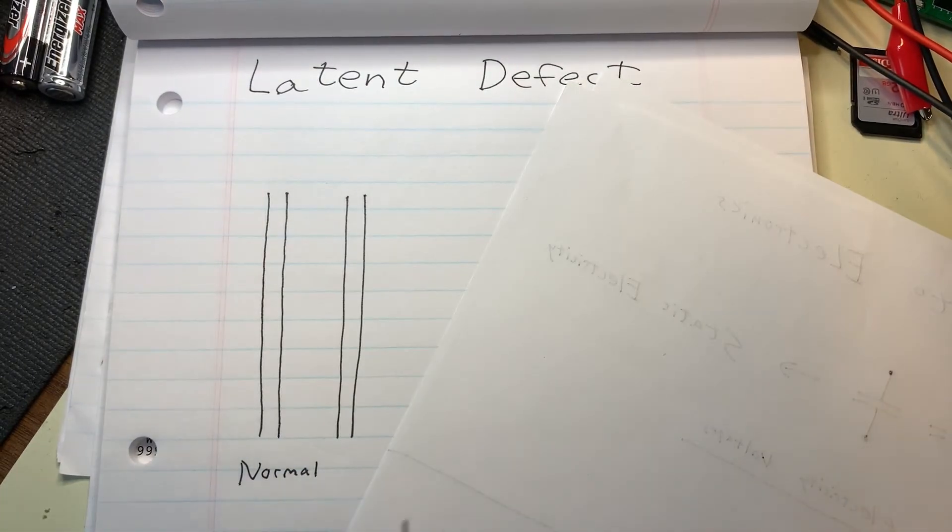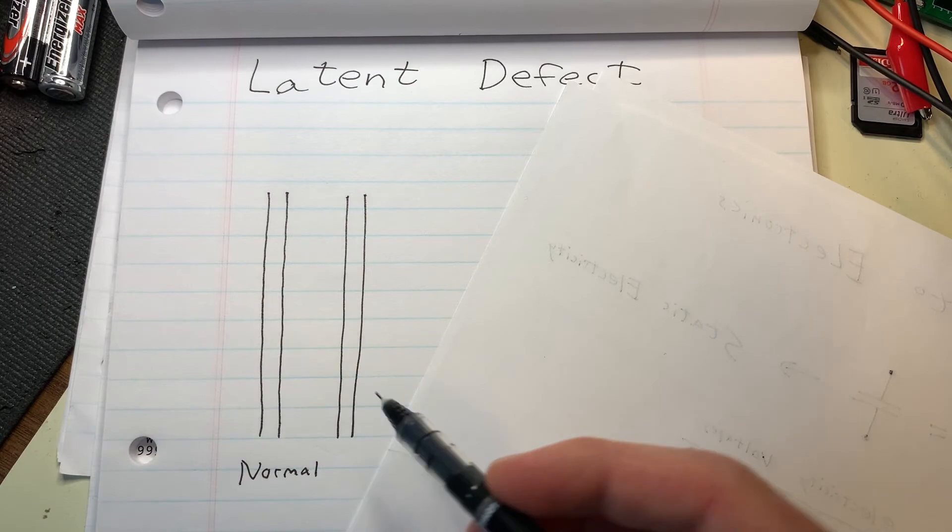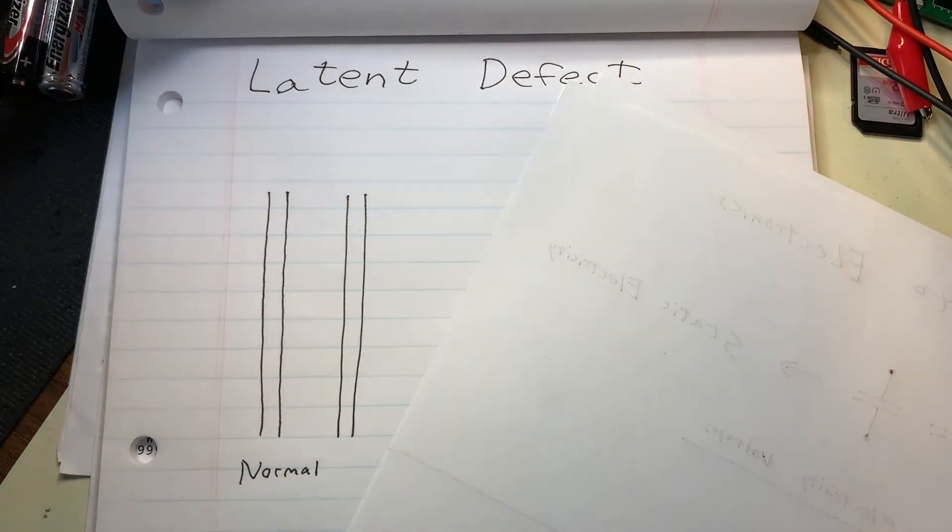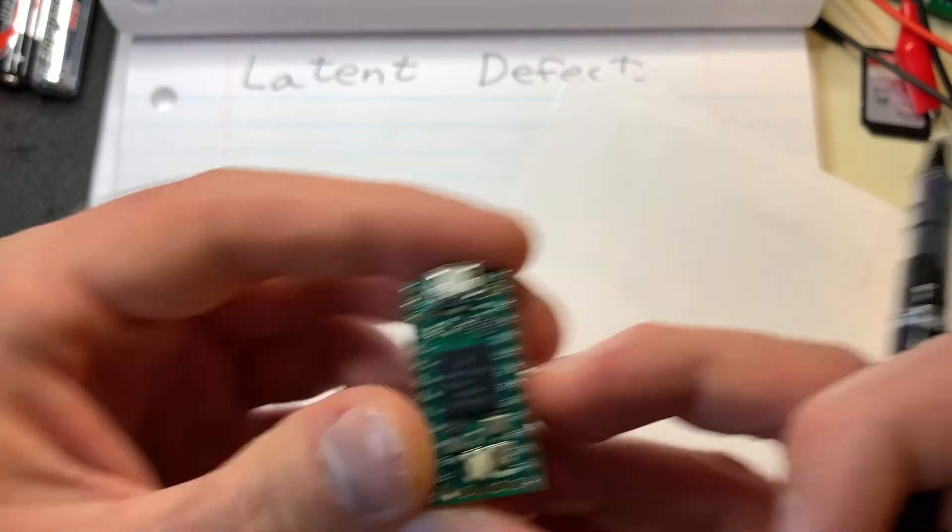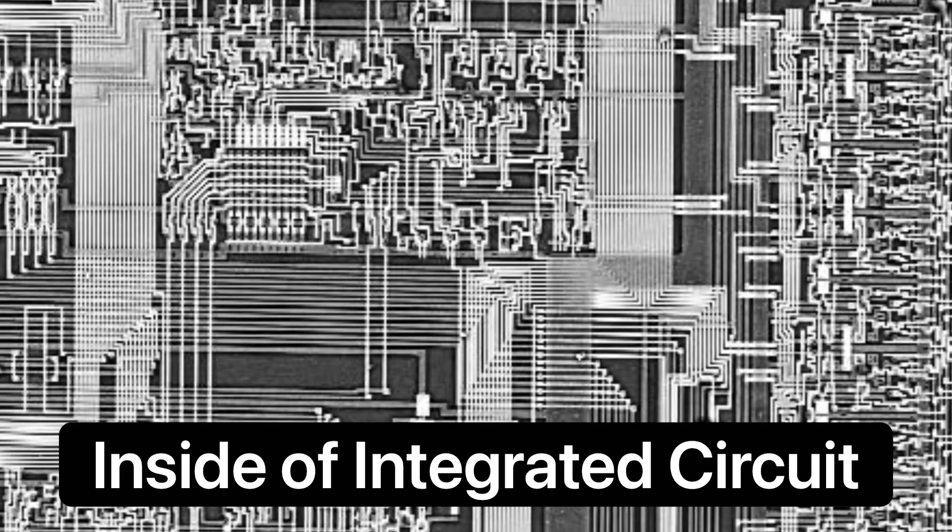So a latent failure, or a latent defect, can look something like this internally. If you'd imagine inside of a circuit chip, a microchip for example, if I take one of these, it's going to have a lot of these very, very small traces where electricity flows.